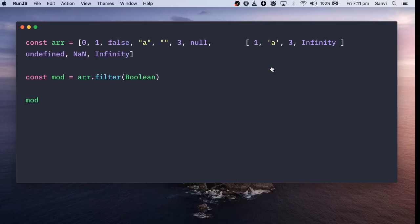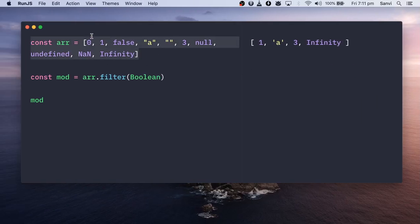Now let's use an example. I have the same data over here and I run it through the filter with the Boolean. So if you see this mod, it contains 1, 'a', 3, Infinity.